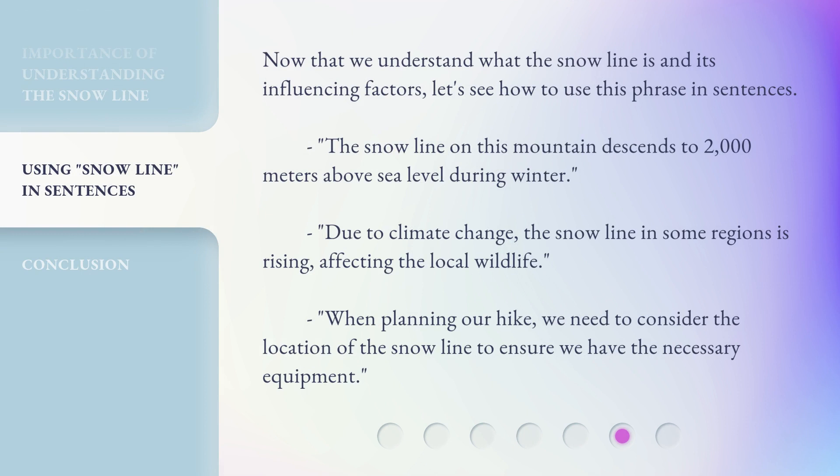Now that we understand what the snowline is and its influencing factors, let's see how to use this phrase in sentences. "The snowline on this mountain descends to 2,000 meters above sea level during winter." "Due to climate change, the snowline in some regions is rising, affecting the local wildlife." "When planning our hike, we need to consider the location of the snowline to ensure we have the necessary equipment."